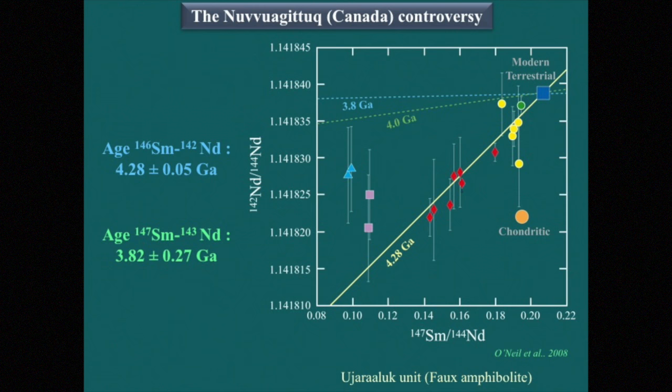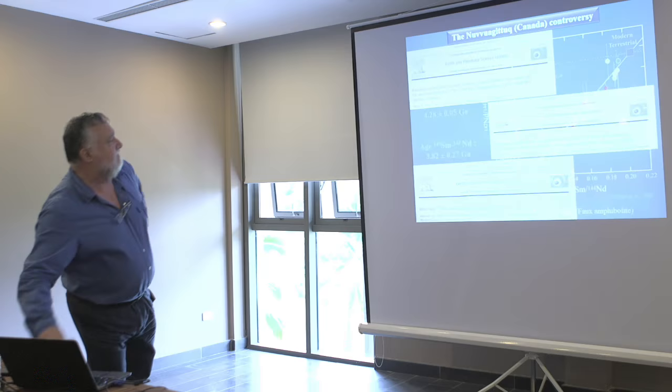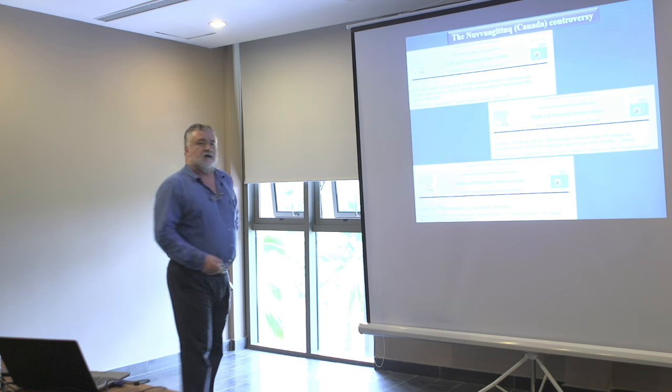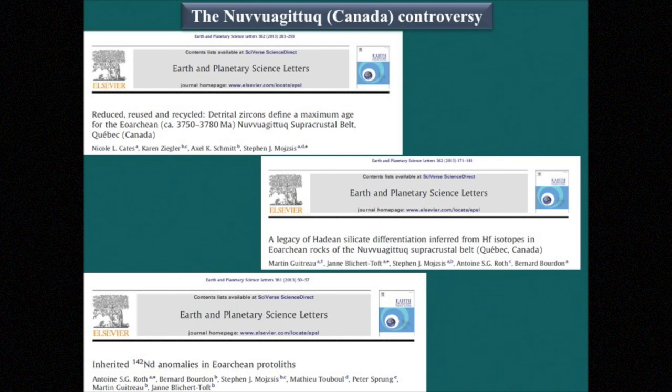The problem is that when you use another isotope, neodymium-143, the age is 3.8 billion years. So on the same sample, depending on the isotope used, you obtain different ages. Recently there were a lot of papers saying that in these rocks, when you look at zircon, there are no zircons older than 3.8 billion years. So I think most people now think this formation is not older than 3.8 or 3.9, because the only evidence for old ages is based on one isotope while the other gives different results.